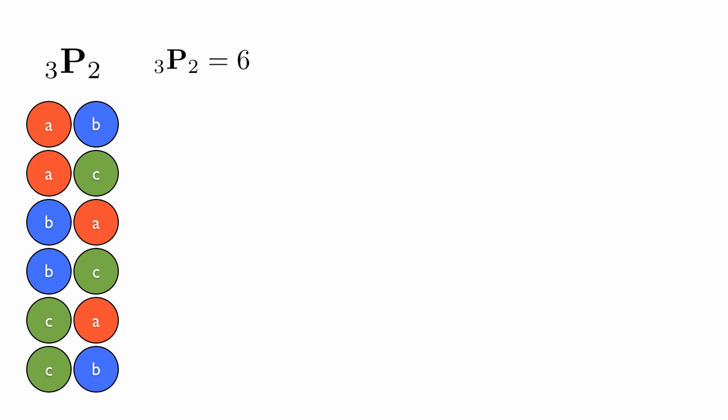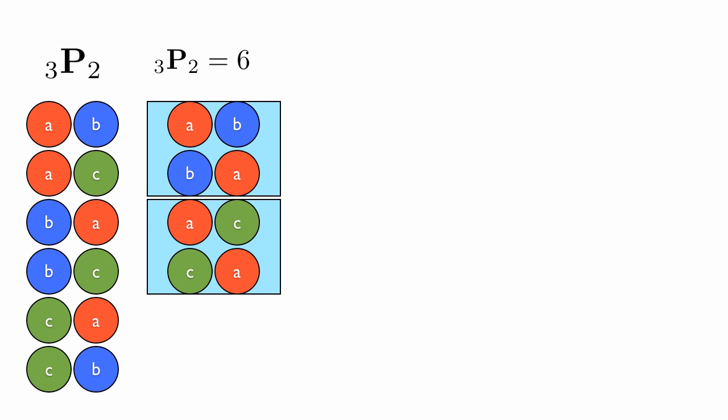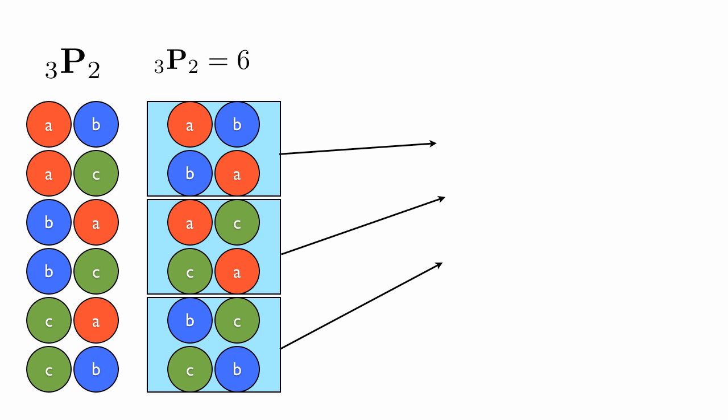But notice we can group these in terms of two at a time with the objects they share. So ab and ba go together, ac and ca go together, and bc and cb go together. Notice that in this case there are three different groupings based on what objects make up each pair. Each of those lead us to what 3C2 is.